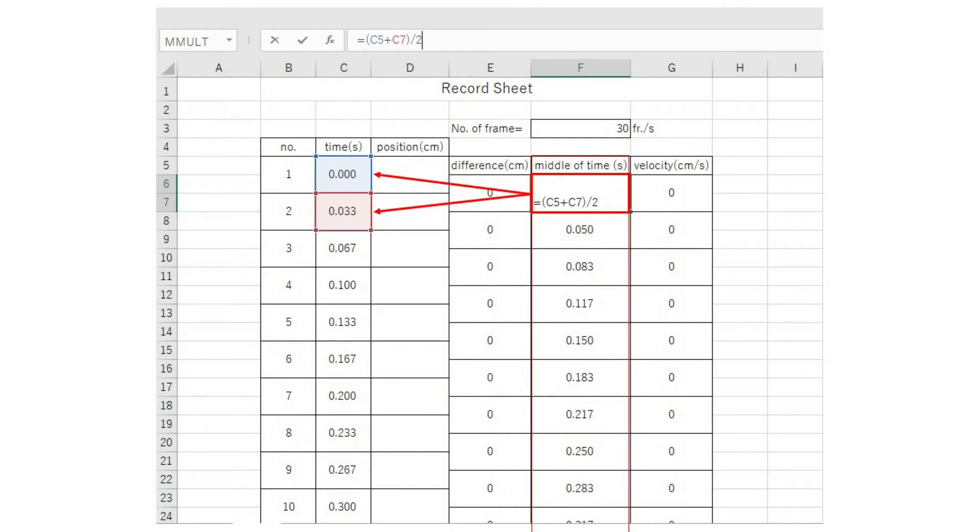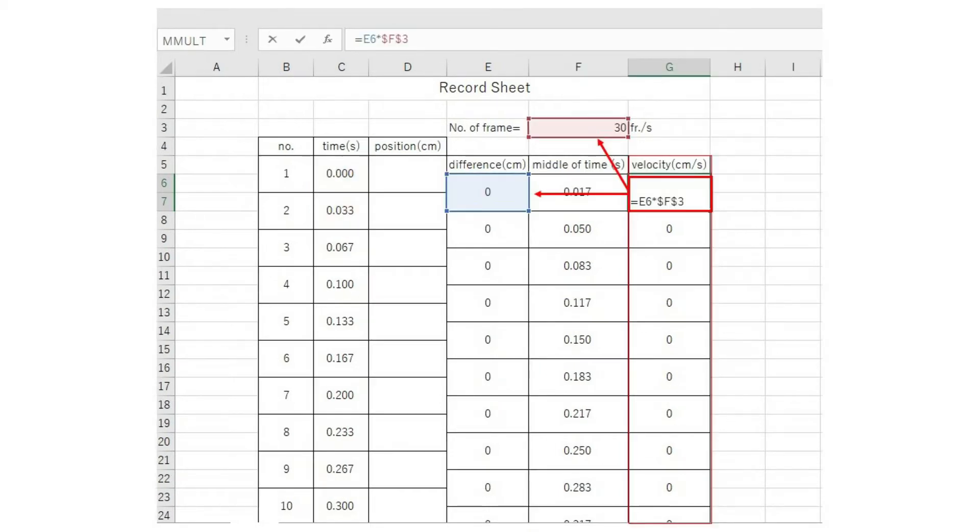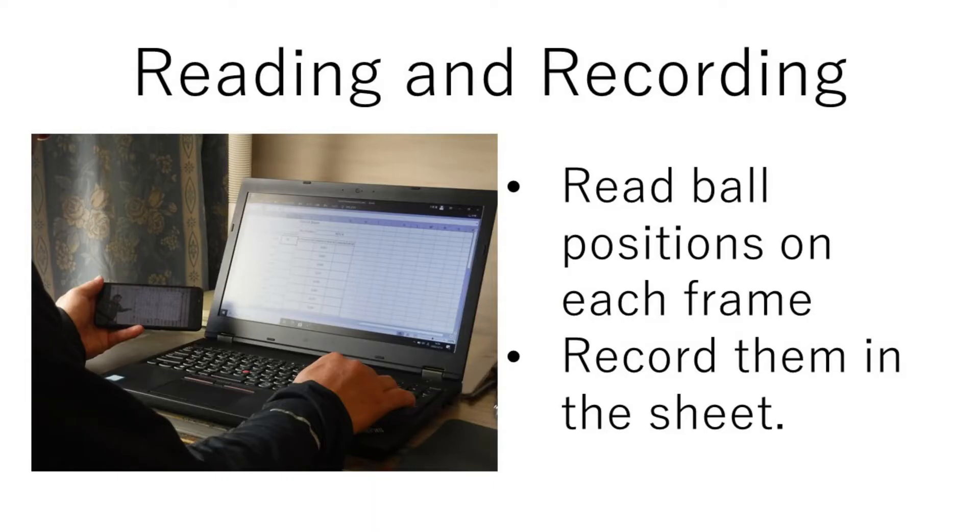The middle of time between the two frames is needed for the velocity and time graph. The velocity between each frame is calculated from the difference and the time of the frame. Let's read and record the ball position from each frame of the video.